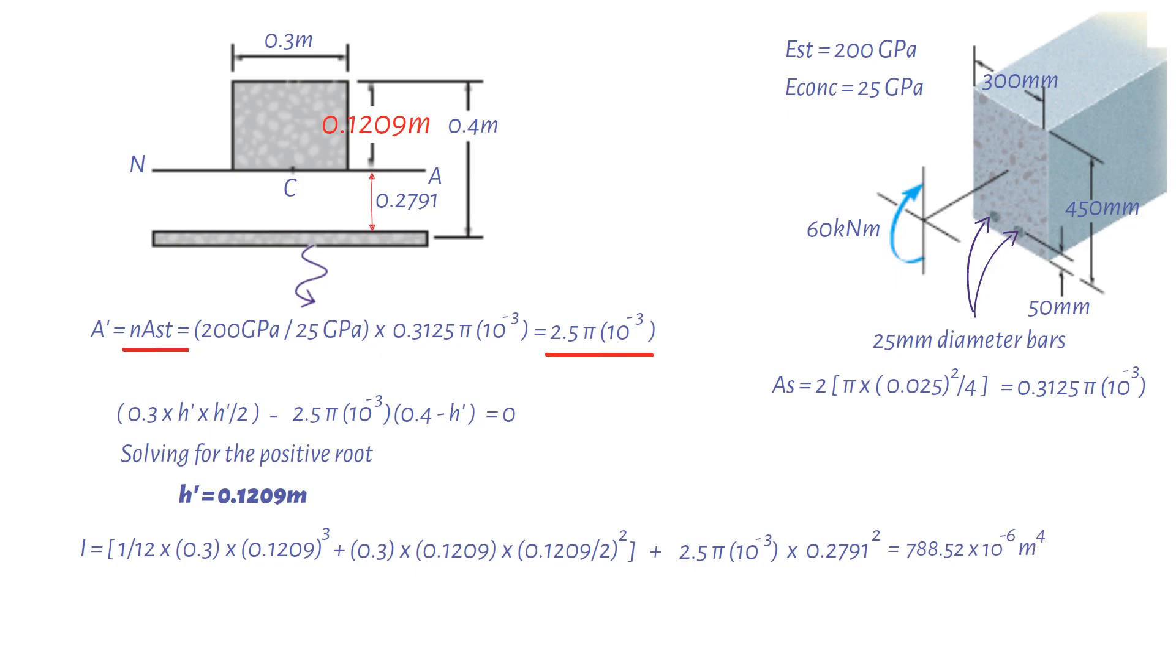We should now be able to obtain our stresses. Applying the flexure formula to the transformed section, the maximum normal stress in the concrete is 60 kilonewtons meters times 1000 to convert it to newton meters times 0.1209 meters divided by the moment of inertia 788.52 times 10 to minus 6 meter to 4. This results in a value of 9.2 newtons per square millimeters.